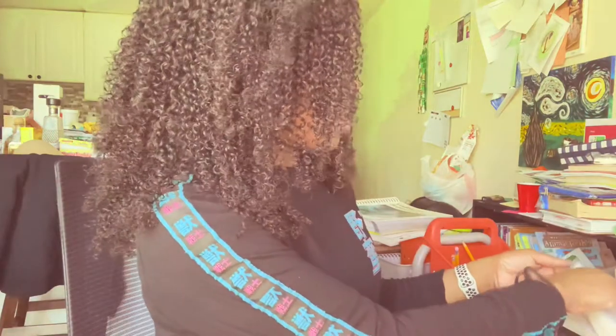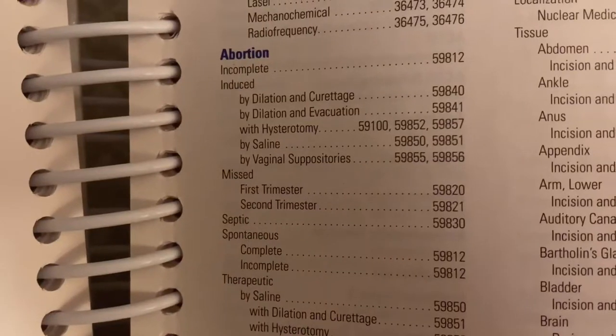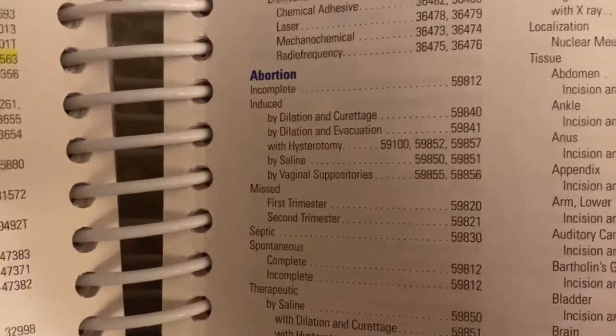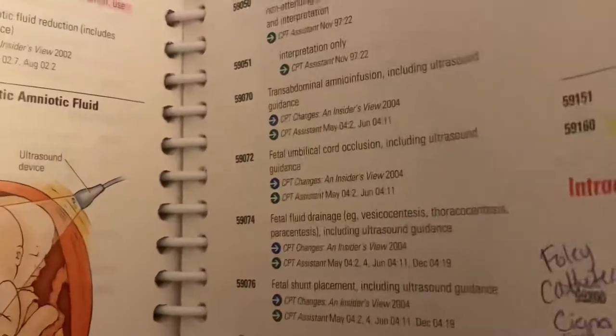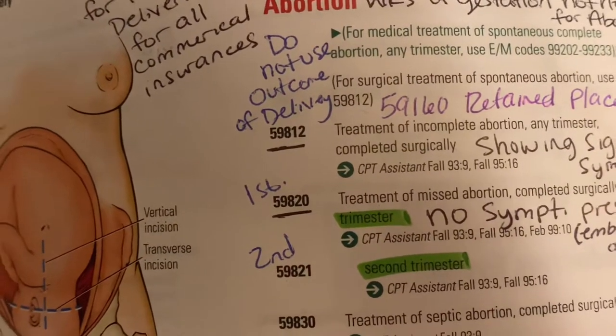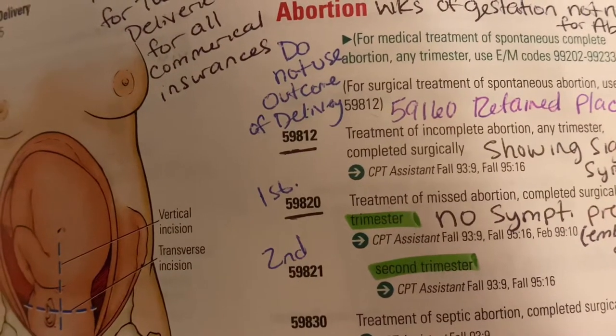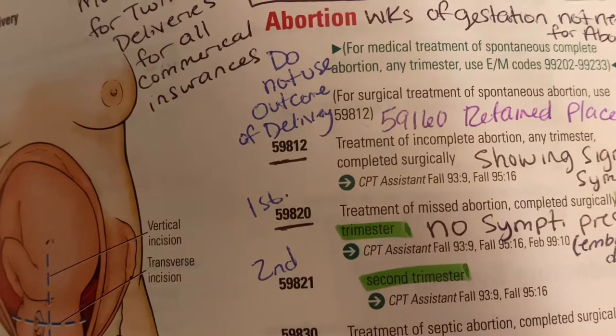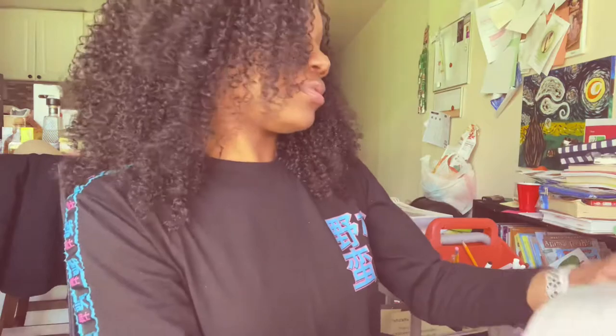If you are looking in your CPT book and trying to determine what code to bill, you would start in the back of your book and look up abortion. Then we are going to look up incomplete. Incomplete tells us to use 59812. Then you go to that code in the maternity and delivery section. That's going to tell you: 59812 is treatment of incomplete abortion, any trimester, completed surgically. That is our CPT code that we are going to bill.